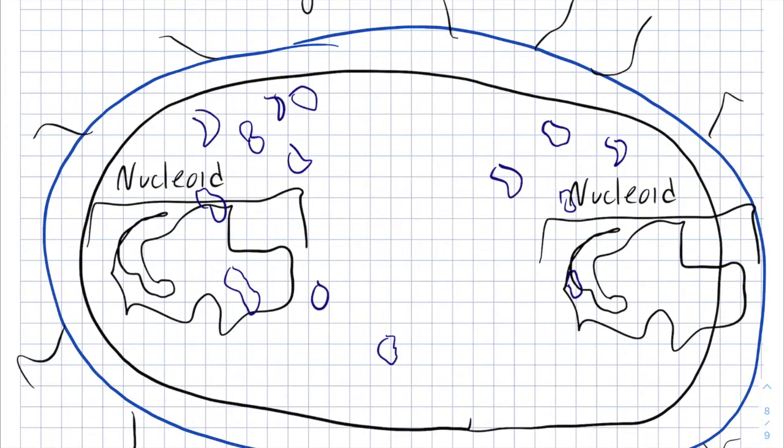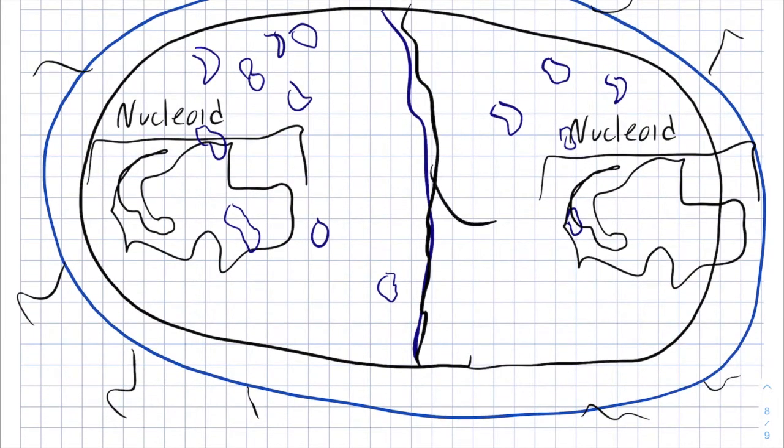After the cell has distributed the nucleoids, the new main circular DNA, to the two poles of the cell, the cell will form new cell membrane and cell wall in the middle and will split into two new cells.